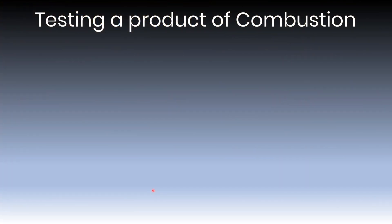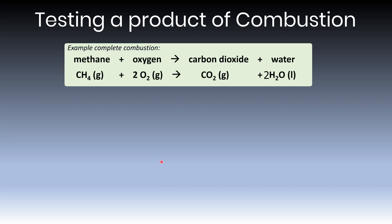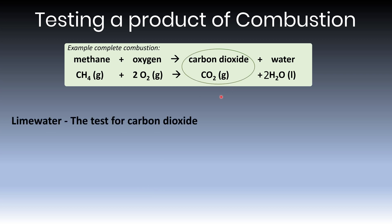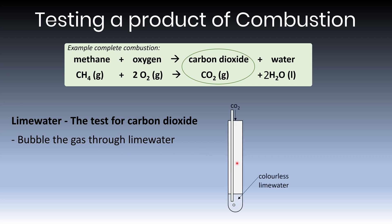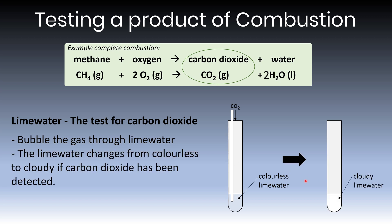Now let's look at how we can test for a product of combustion. The main product we want to test for is carbon dioxide. The test is lime water: bubble the gas through the lime water, and if carbon dioxide is present, the lime water will change from colourless to cloudy. That full colour change — colourless to cloudy — is the positive result for detecting carbon dioxide using lime water.